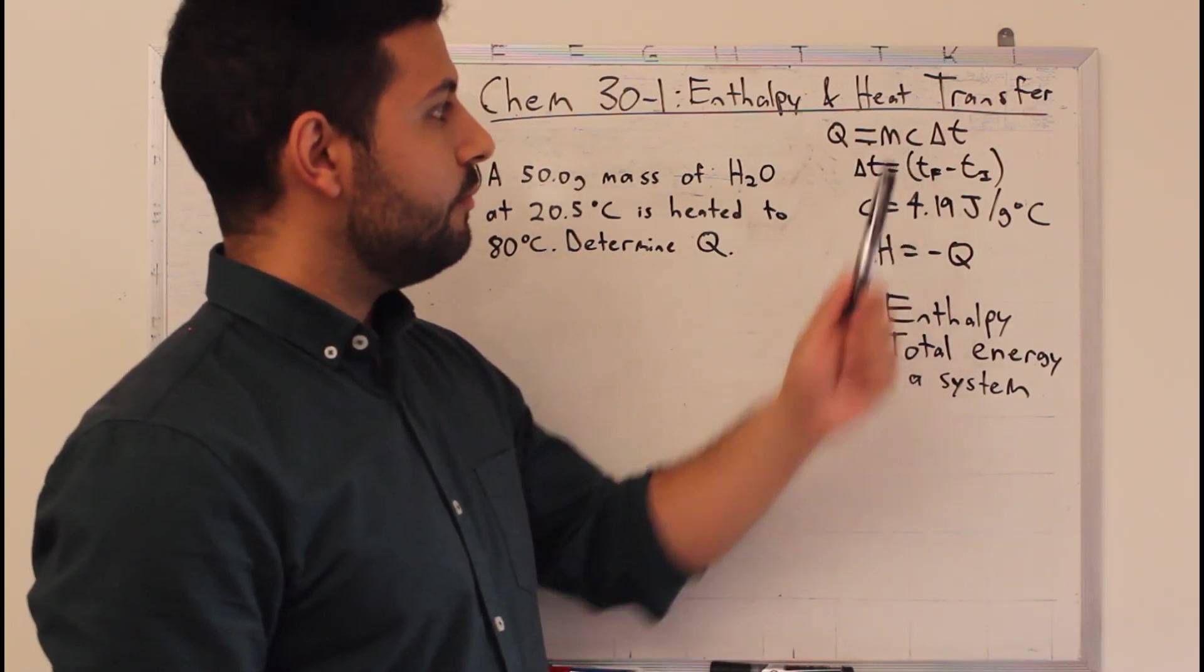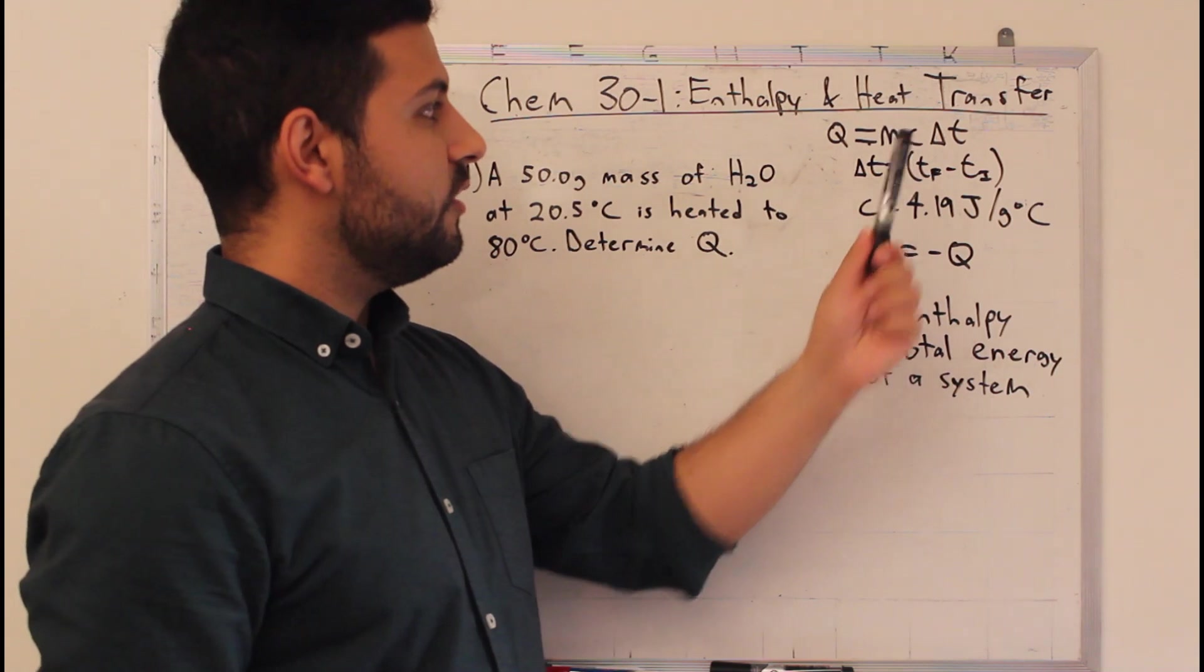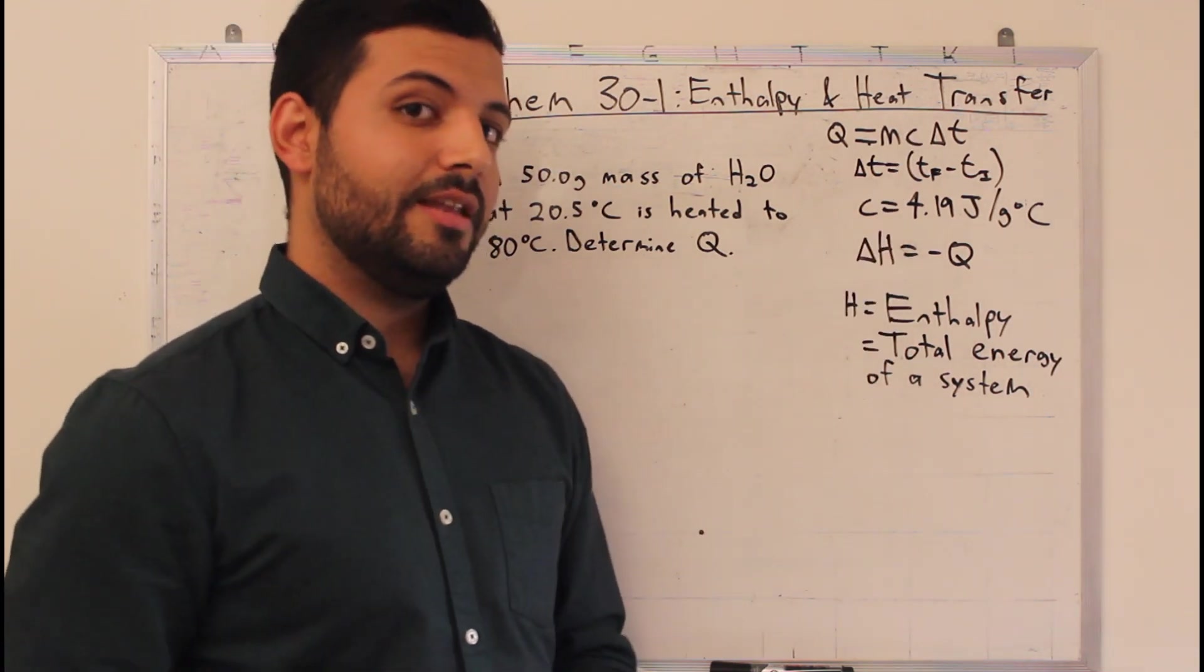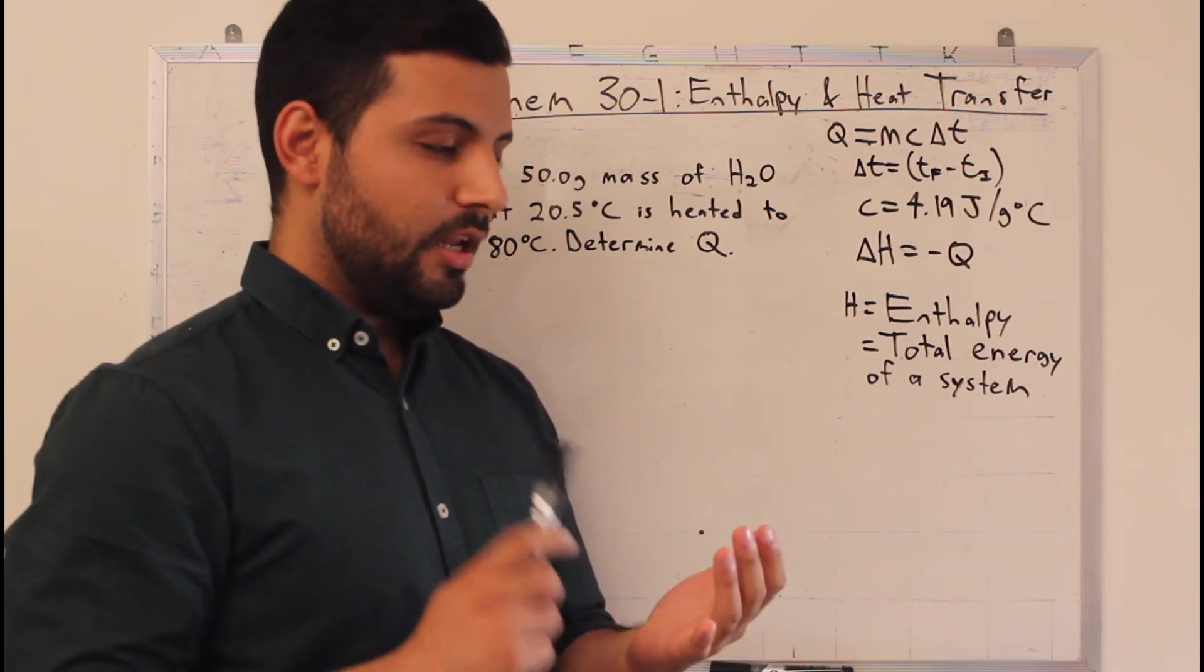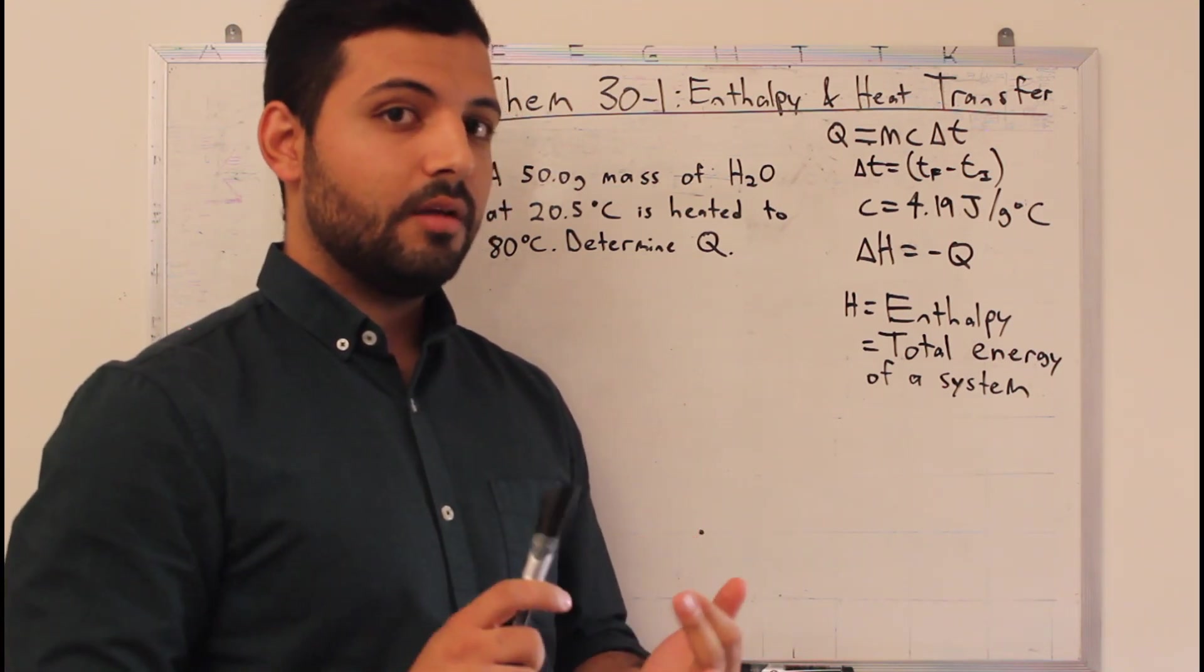We break it down into its parts: m, mass in grams. C is something called the specific heat capacity, and all that is is a fancy term of saying how much energy does it take to heat up one gram of something by one degree.